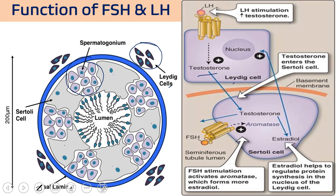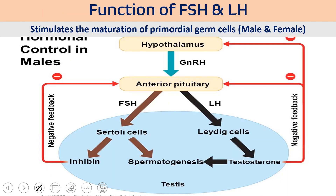Testosterone cannot be converted to estrogen directly in Leydig cells because that conversion requires the aromatase enzyme, which is absent there. So testosterone must move from Leydig cells into Sertoli cells. On Sertoli cells there are FSH receptors; FSH binds and stimulates activation of the aromatase enzyme, which converts testosterone into estradiol. This estradiol then regulates protein synthesis in the nucleus of the Leydig cells.